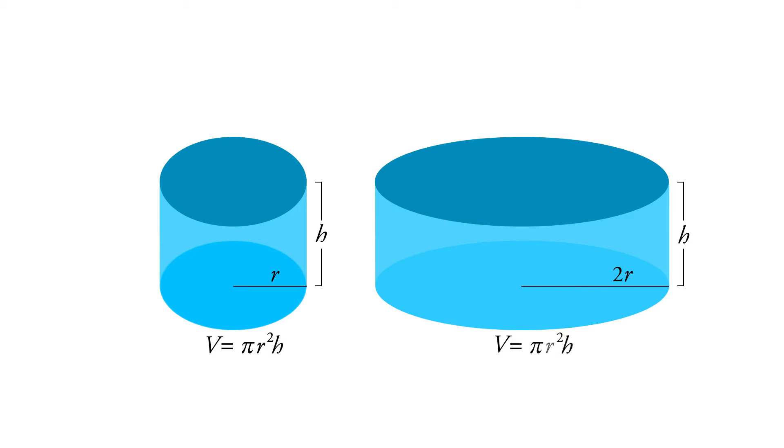Now we're going to replace r with 2r because we've doubled the radius. So we can say that the volume of our new can is equal to pi times 2r, and we're going to square that 2r times the height.